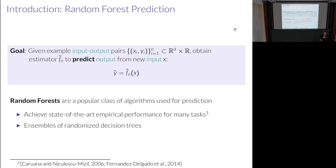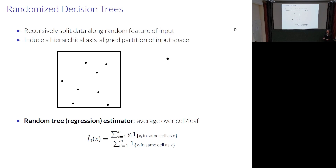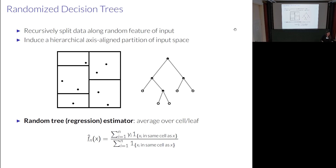Deep learning has sort of outpaced random forests in many applications, but they're still very widely used and achieve state-of-the-art performance in many settings. They're also often preferred because of their relative interpretability and explainability compared to deep learning. This is because random forests are ensembles of randomized decision tree estimators. A randomized decision tree estimator is obtained by recursively splitting the data along a random feature of the input, producing a random binary tree that splits data into leaf nodes. This simultaneously induces a hierarchical, axis-aligned partition of the input space.